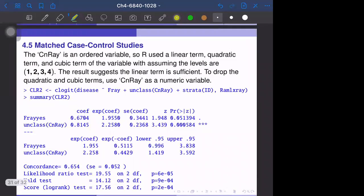Now you can drop the quadratic term and the cubic term of this CN-ray function. UNCLASS makes this function as just 1, 2, 3, 4. We don't include the more complicated term such as the quadratic or cubic term. We now only have two variables, two predictors in the model, and the estimated coefficients are both highly significant. CN-ray is highly significant, and F-ray has the P value of 0.051, so we would say it's marginally significant or maybe marginally insignificant.